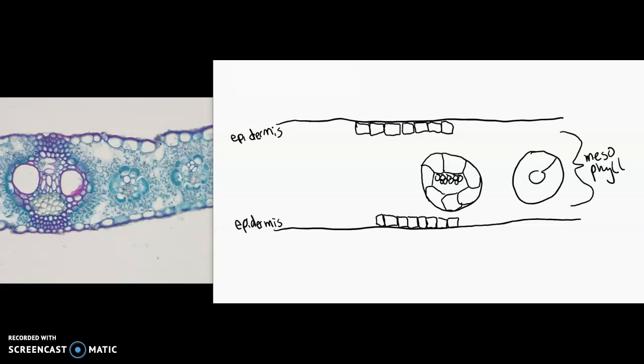So we have our bundle sheath with our vascular tissue inside. Remember the bundle sheath is where rubisco will be sequestered away from oxygen. And then here we have some fibers that are helping to give that great big midvein some support.